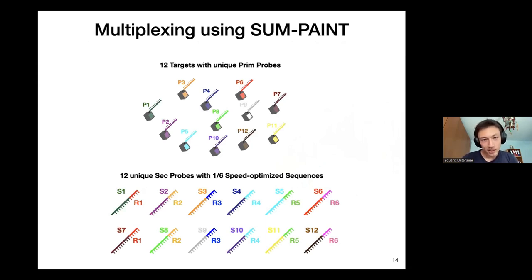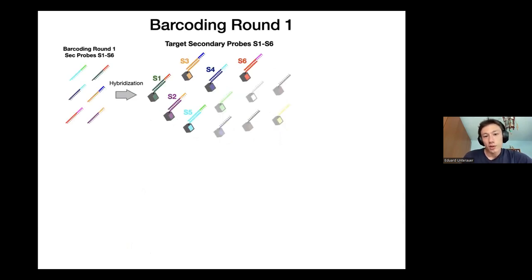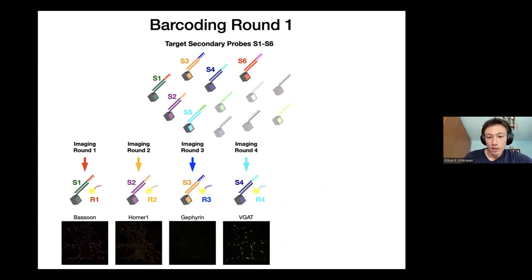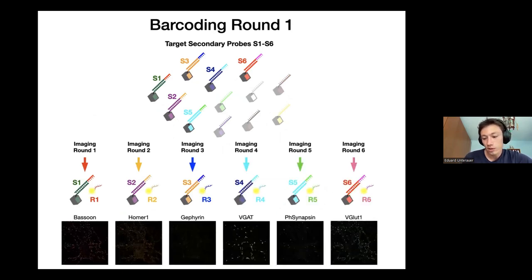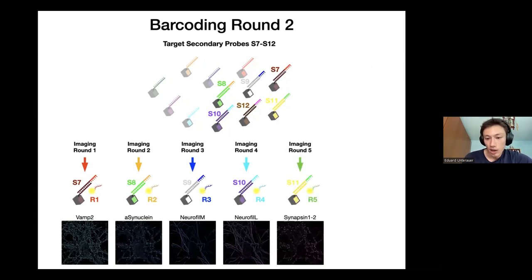We then built on this technology and extended it in an approach called SOPA-PAINT. The concept: we have 12 targets with primary probes and 12 unique secondary sequences carrying the identity S1 to S12, each with one of six R sequences as readout. In the first barcoding round, we hybridize the first six targets, read them out one after another at 100x speed, displace those six sequences, hybridize the next set of six, and image them again at 100x speed.